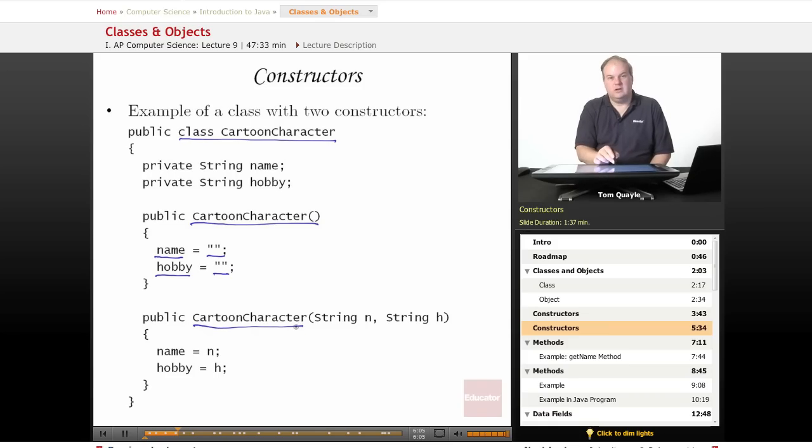There's a second constructor here, also named CartoonCharacter because a constructor must match the name of the class, but this one has a different signature. If I want to have more than one constructor, they must each have a different signature. This one takes two strings—it takes a string n and a string h—and then what it does is sets the name data field to whatever is passed in as the string n, and it sets the hobby field to whatever is passed in as the string h.